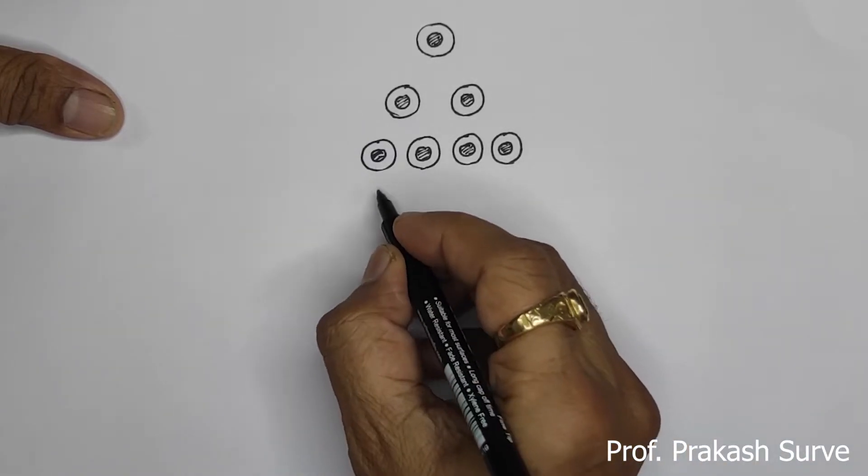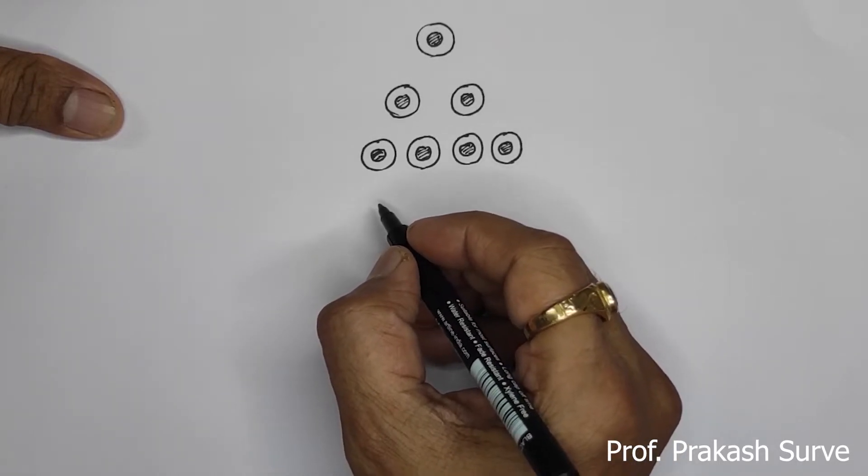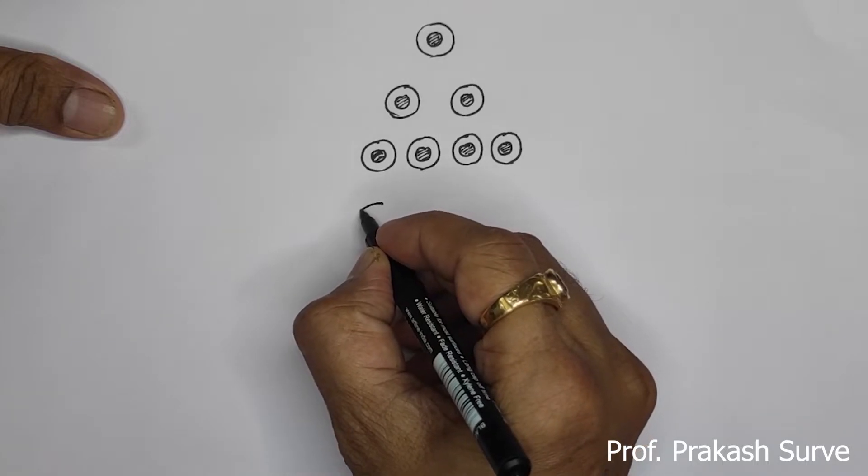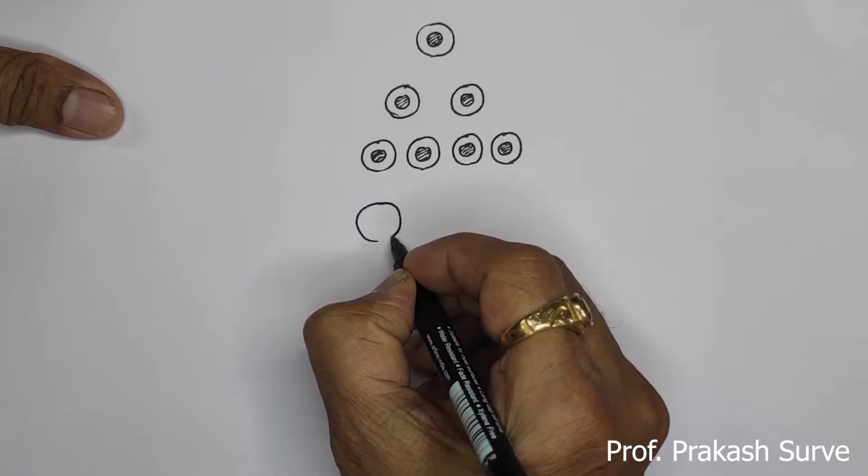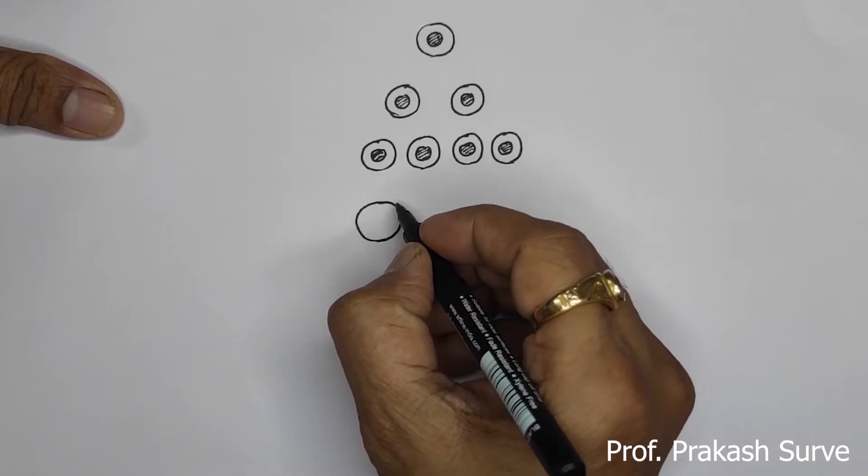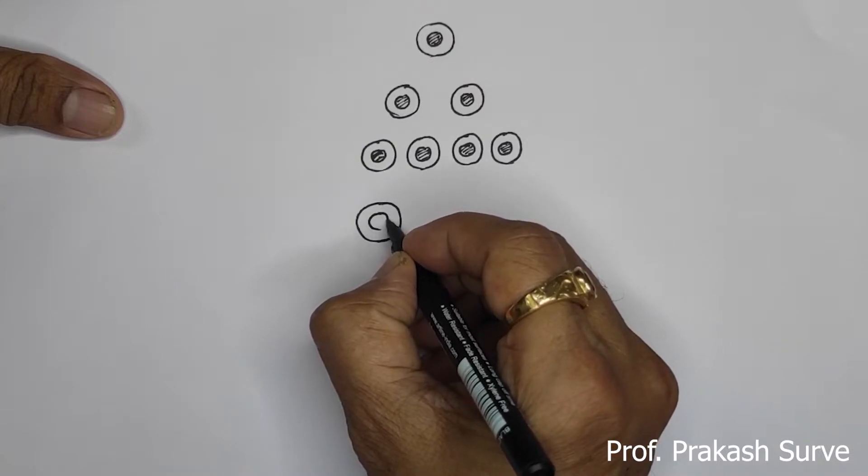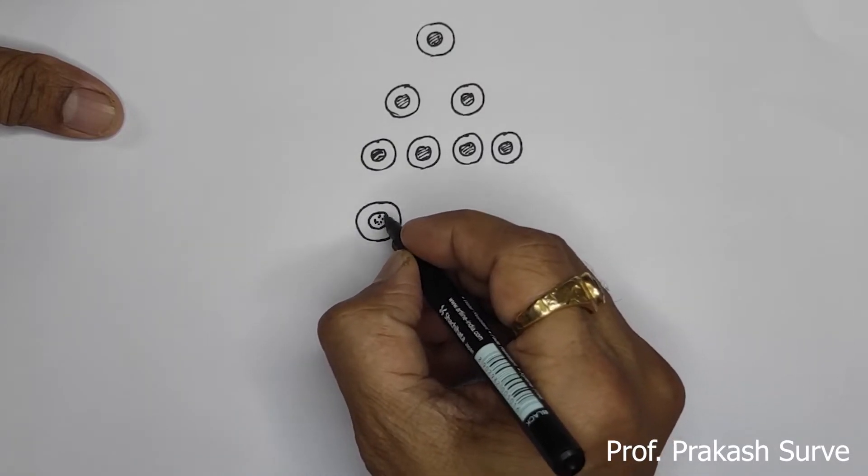Now from this, one of these we get the primary spermatocyte. From here we get the primary spermatocyte which is having a bigger size, so we can say that this is about the growth phase.